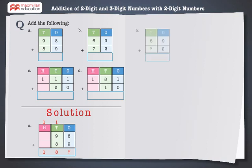Let's solve the next problem. Add the digits at the 1's place first: 9 plus 2 is equal to 11. Regroup 11 as 1 ten and 1 one. Now add the digits at the 10's place: 1 plus 6 plus 7, which is equal to 14.